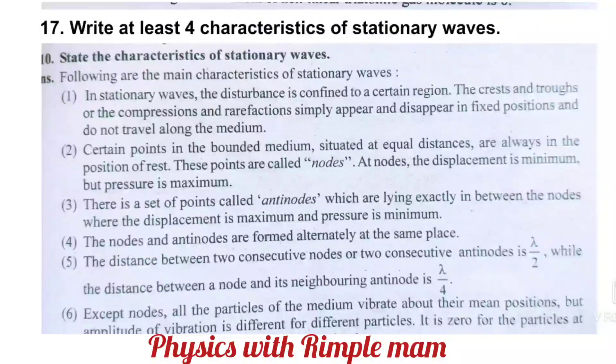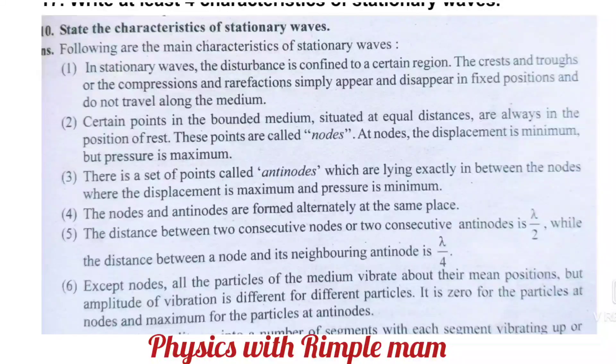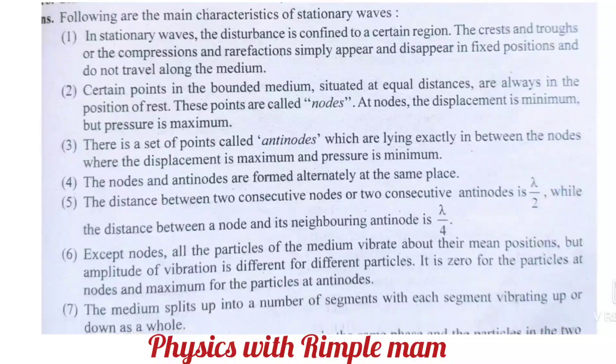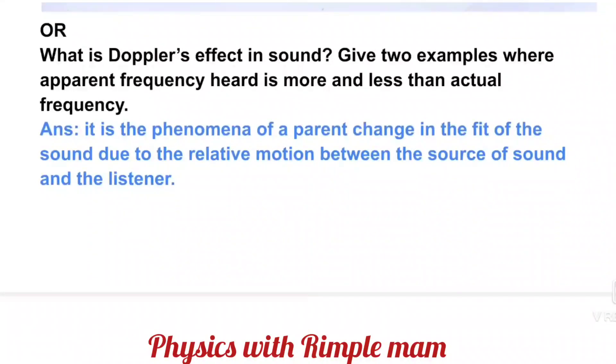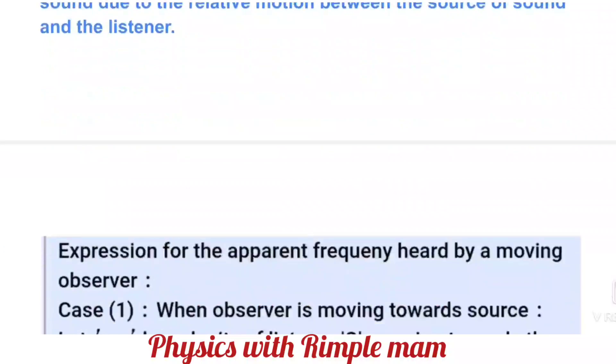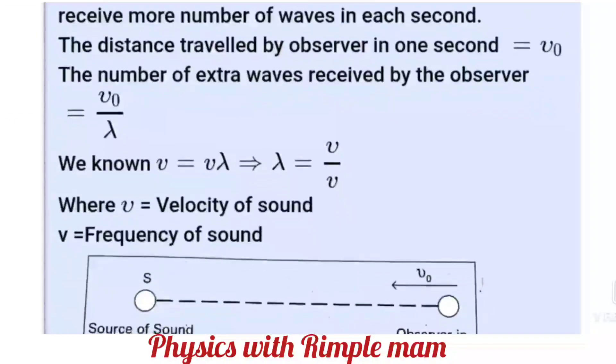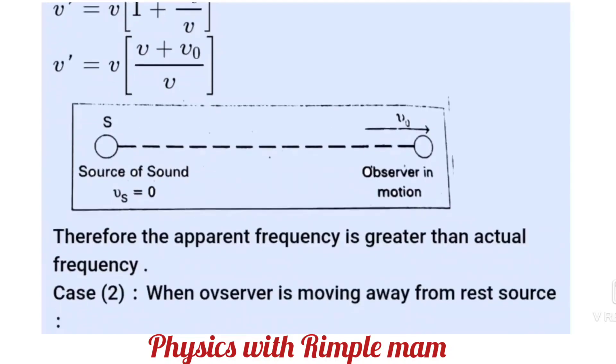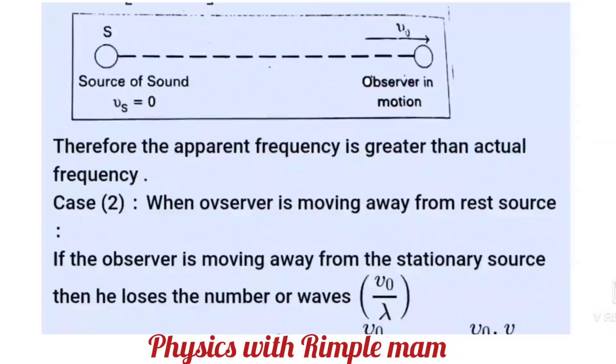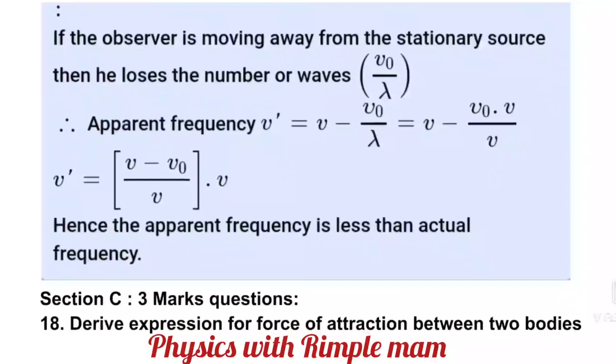Next: What do you mean by degree of freedom? Write the number of degrees of freedom for monoatomic, diatomic, and linear triatomic gas molecules. First, write the definition, then write about monoatomic, diatomic, and linear triatomic gas molecules. You don't need to write about non-linear since it's not asked. Actually, you'll get the exact answer from last year's Arihant book, as this year's book hasn't been published yet. Next: Write at least four characteristics of a stationary wave.